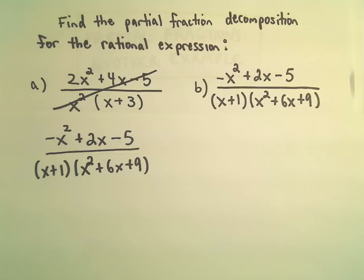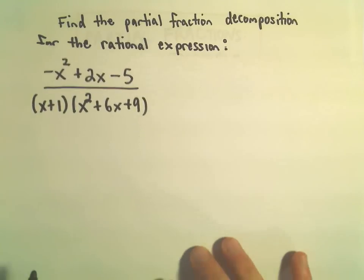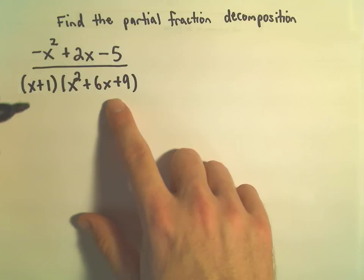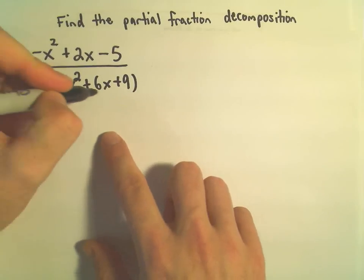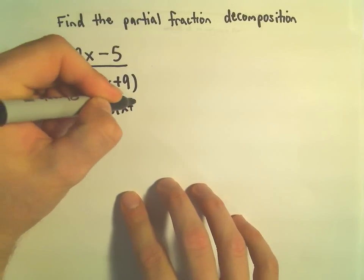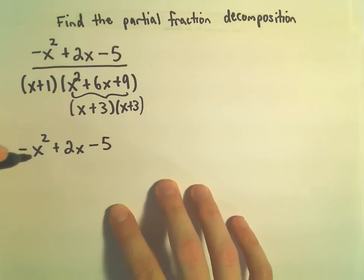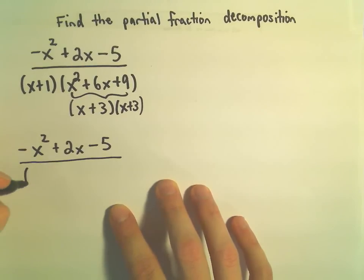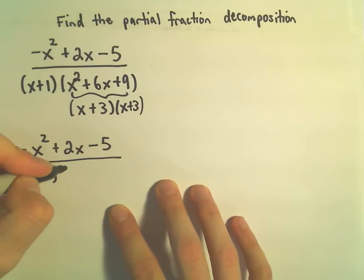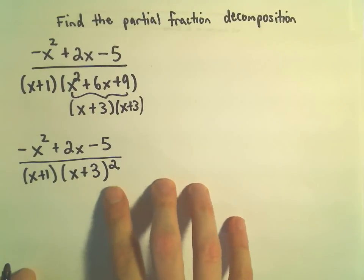One thing I do always have to ask myself, because sometimes you'll be given things in a form that's not completely factored, is I have to think: does this denominator factor any further? And the answer here is yes. Notice x squared plus 6x plus 9 factors as x plus 3 times x plus 3. So we've got x plus 3 squared — a linear factor, but it's repeated.